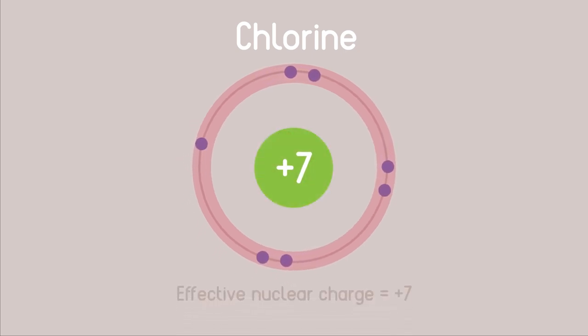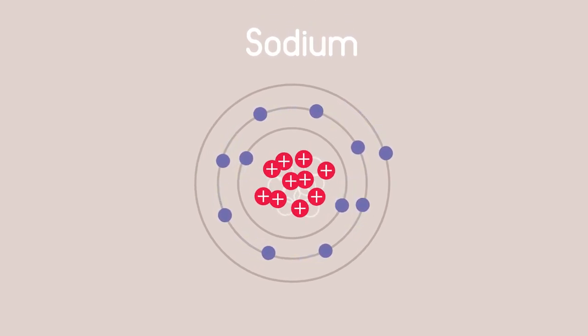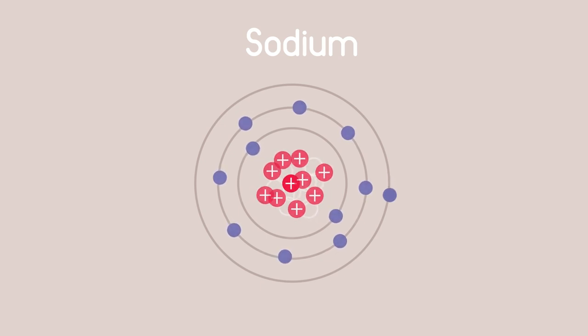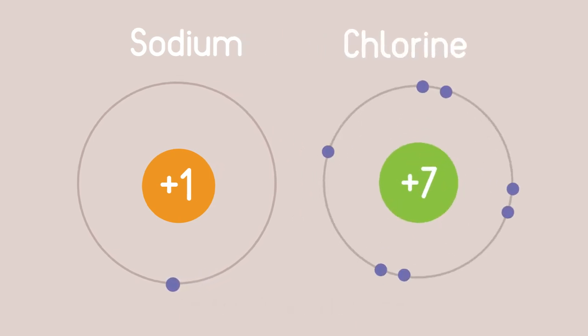Sodium, with eleven protons and eleven electrons, has also ten inner electrons, leaving an effective charge of only plus one to hold its single outer electron. Thus, we see why non-metals with nearly full shells hold on to their electrons more strongly than metallic elements with nearly empty shells.